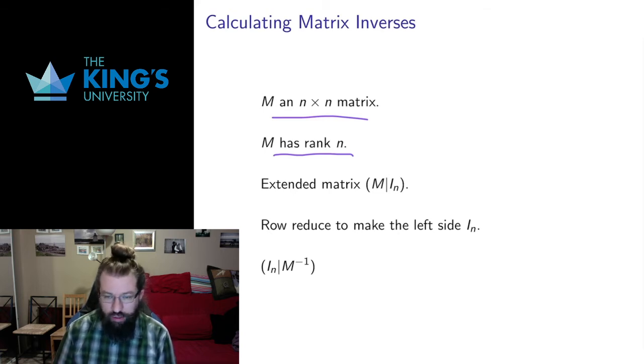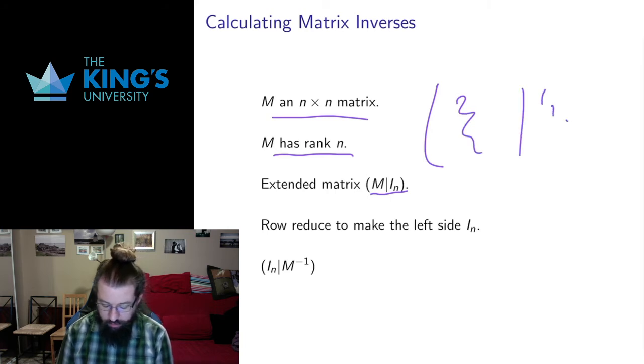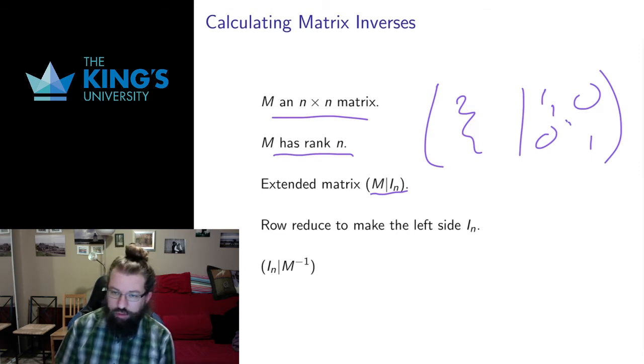How we calculate these is still using the row reduction algorithm. We'll see again and again in this course the row reduction algorithm gives us information about matrices in all sorts of contexts. So what I'm going to do is I'm going to write the extended matrix M separated with the identity. So whatever the entries of M are, I'll write here, and then I'll write the identity matrix with its ones down the diagonal and zeros everywhere else here. So I'm going to get a 2n by n matrix, so it's going to be twice as wide.